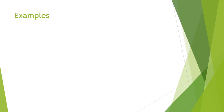Let us understand this with an example. I have taken the number 1001, where the subscript 2 indicates it is a binary number. We need to convert this into its corresponding decimal, because the target base 10 is given — so we convert it into decimal.